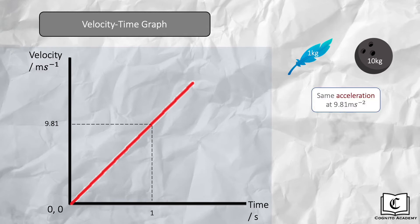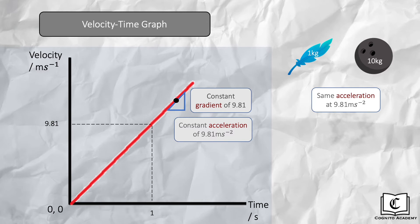Here's the velocity-time graph for both the bowling ball and the feather. Note that both objects share the same line on the graph since we learned that both their accelerations are the same at 9.81 meters per second squared. Once both objects are dropped, we see a straight line graph with a constant gradient of 9.81, since we know both objects undergo constant acceleration of 9.81 meters per second squared due to gravity. Another feature of the graph is the area under it, which gives us the displacement of both objects.